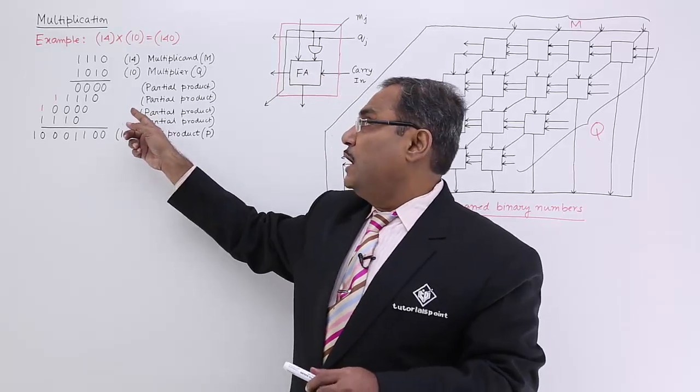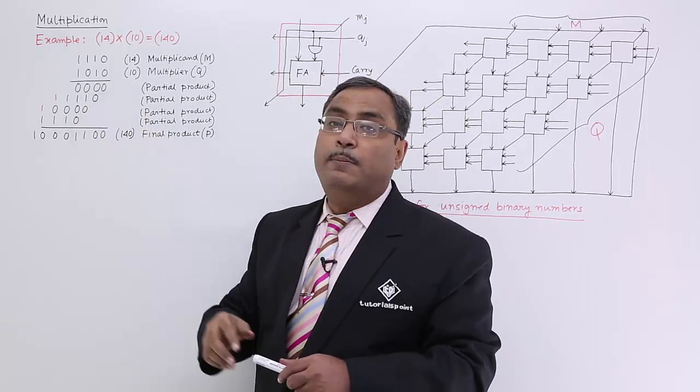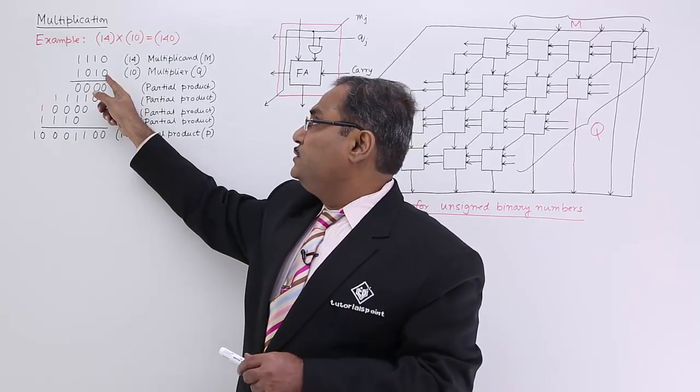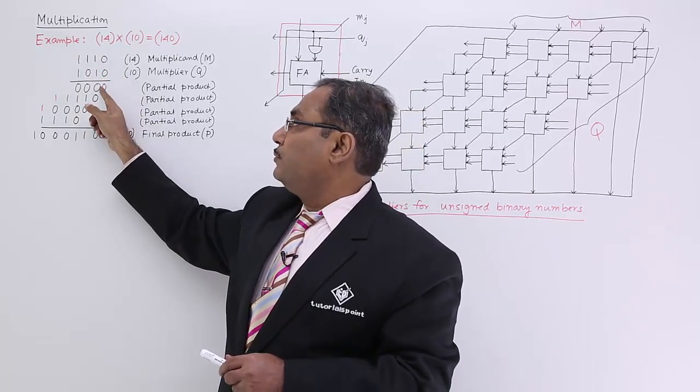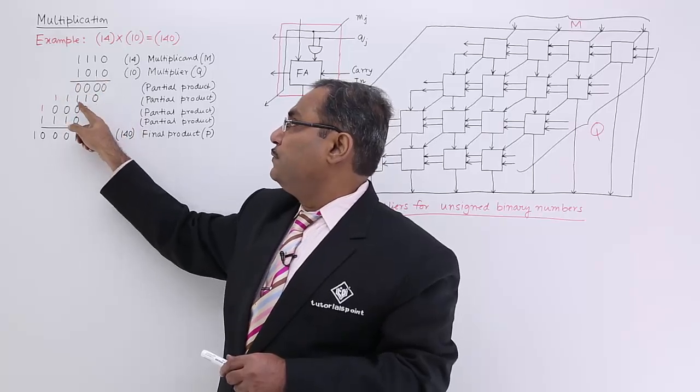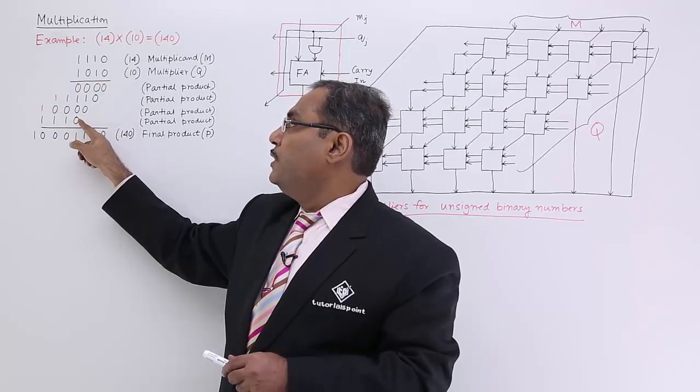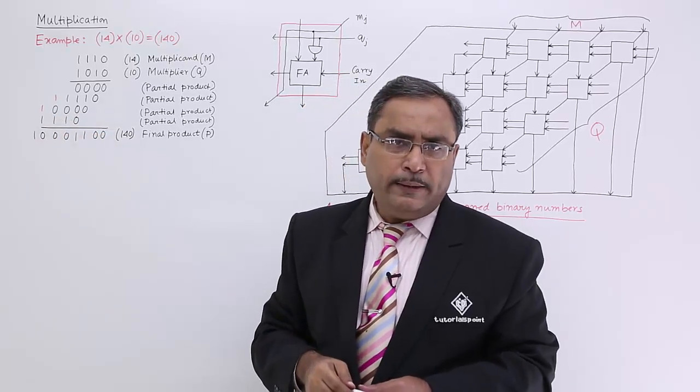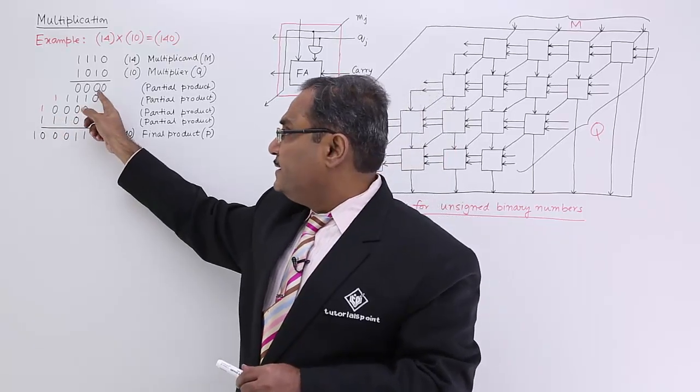So here you see, how many times did I do the multiplication? 16 times. Why? Because 0 into all this 4, then 1 into all this 4, 0 into all this 4 and 1 into all the 4 bits of the multiplicand. So as a result of that, I had to do 16 times.